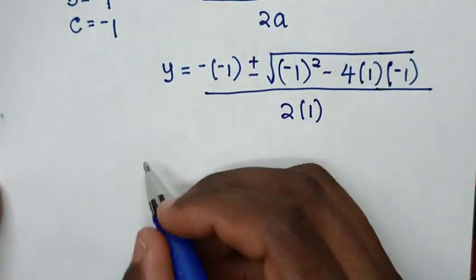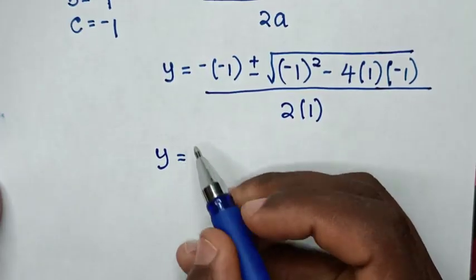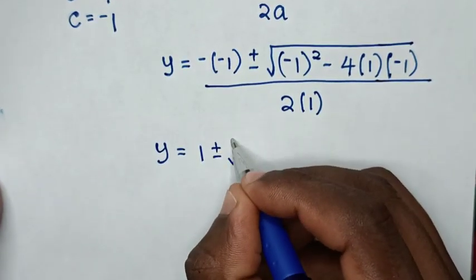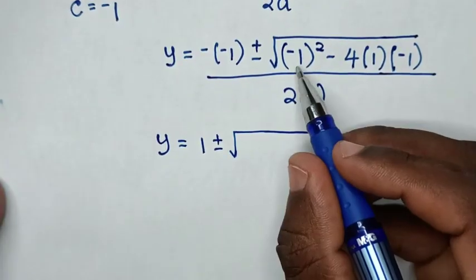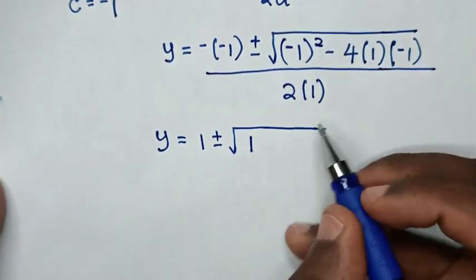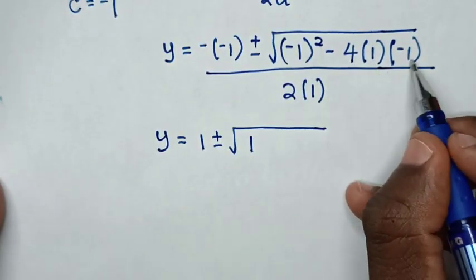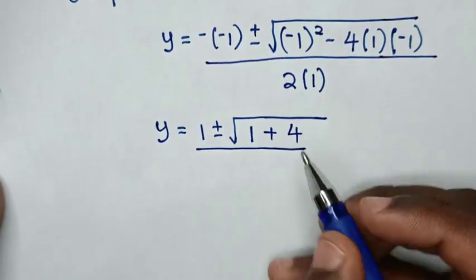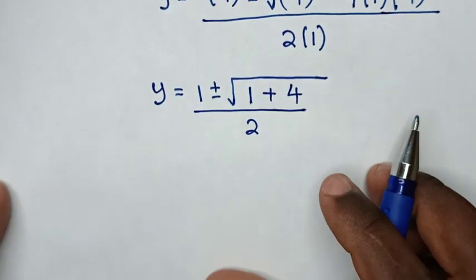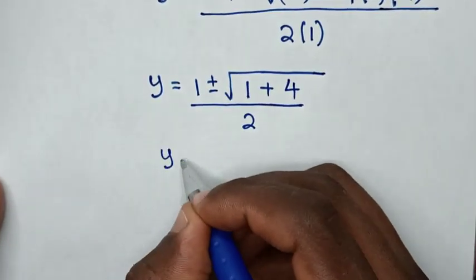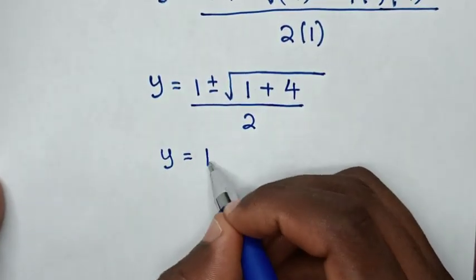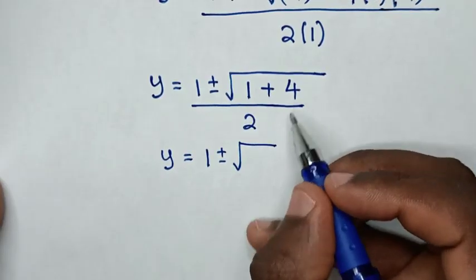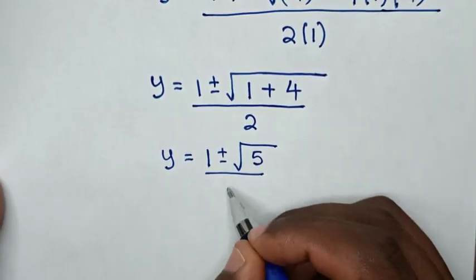Then in the next step, negative times negative 1 is positive 1, plus or minus the square root of negative 1 squared is 1, then negative 4 times 1 times negative 1 is positive 4, all over 2 times 1 is 2. So it becomes y = (1 ± √(1 + 4)) / 2 = (1 ± √5) / 2.